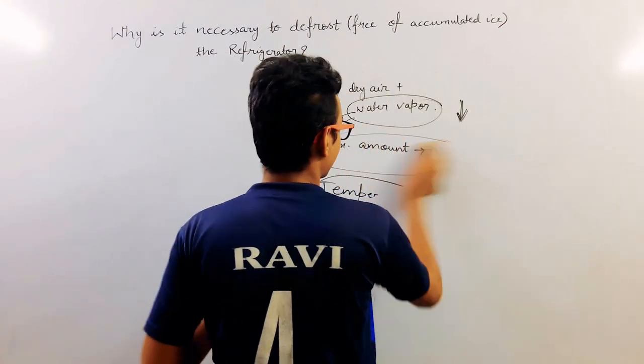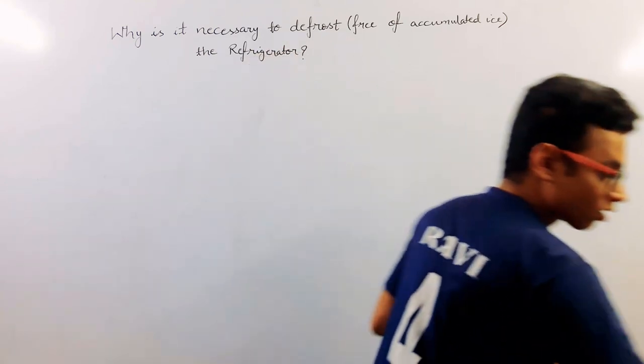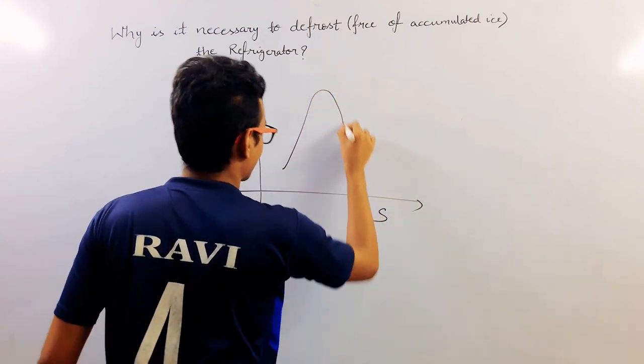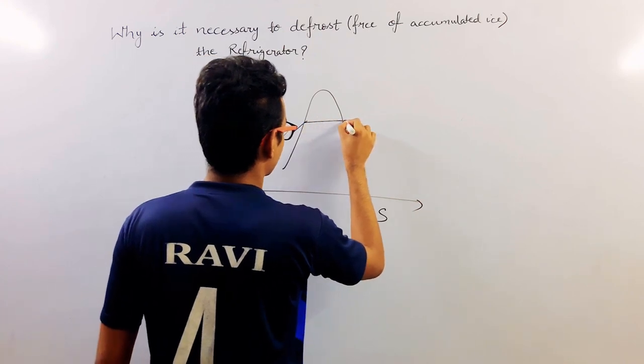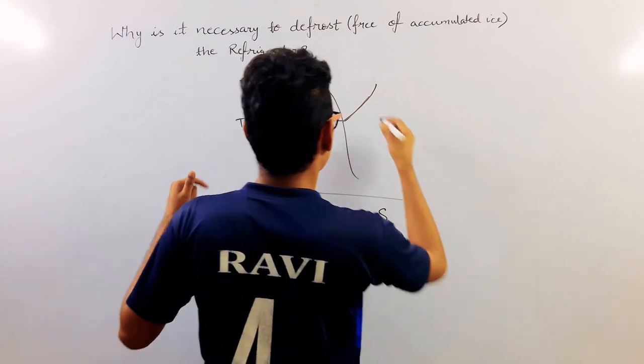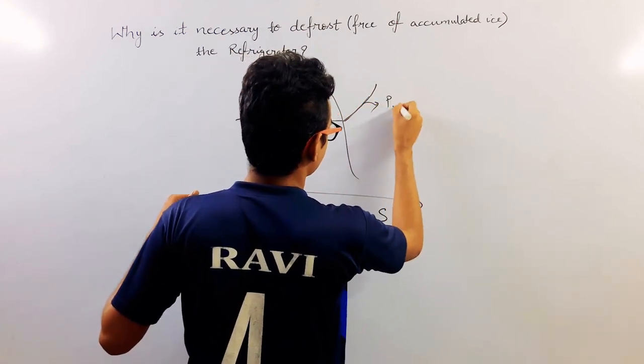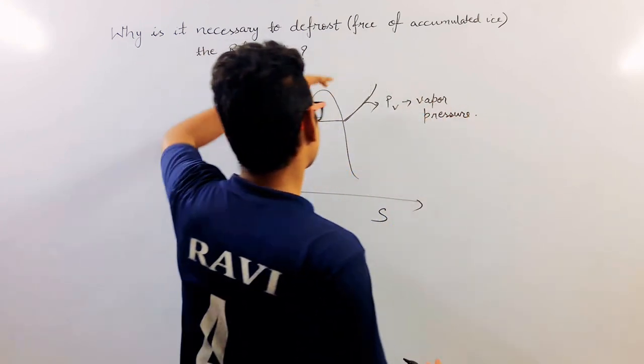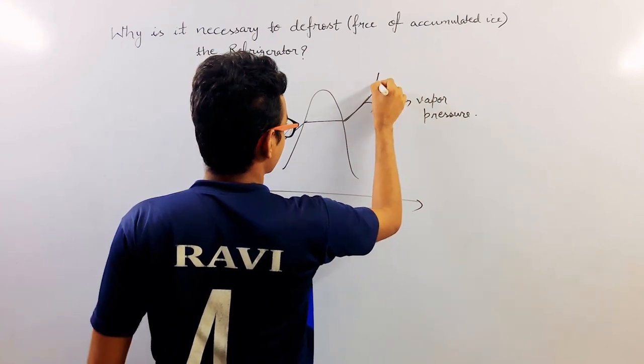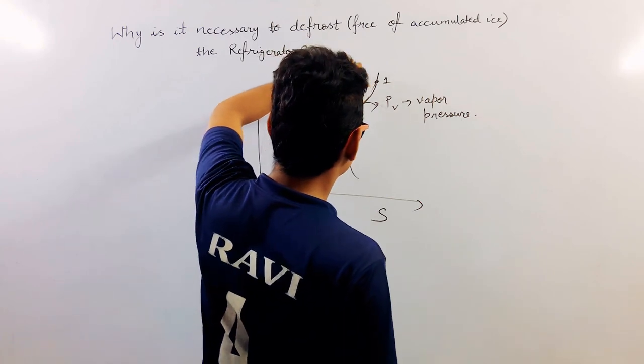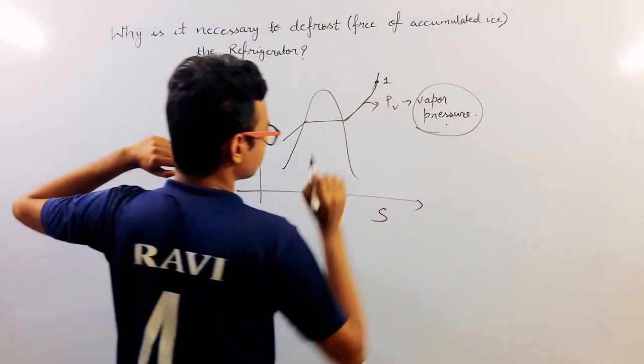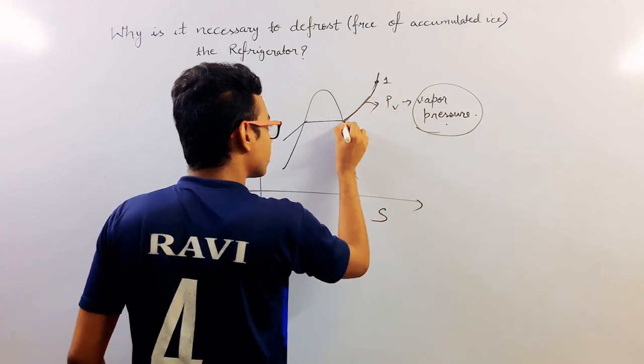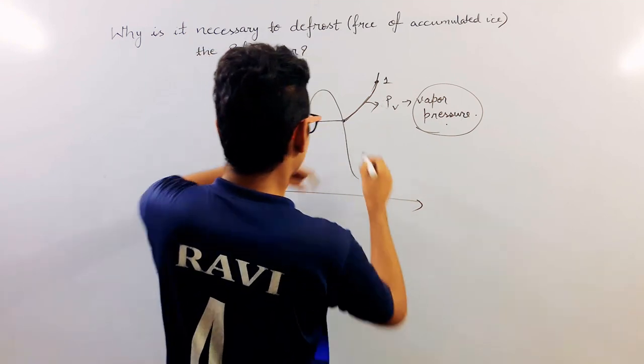So if I am going to make the TS diagram like this, suppose air is at a particular vapor pressure PV and we are not disturbing this vapor pressure. We are starting to decrease the temperature at a constant pressure, and that pressure is vapor pressure. We will just go like this and eventually we come at a point which is nothing but the saturated vapor point.